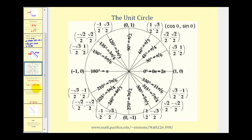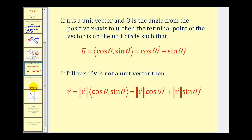While we're talking about unit vectors, it's also helpful to refer to the unit circle. If we have a position vector with magnitude one, the terminal point of the vector would be on the unit circle, and the x and y coordinates on the unit circle give us the component form of the vector. So if u is a unit vector and theta is the angle from the positive x-axis to the vector u, the component form can be written as (cosine theta, sine theta), or as cosine theta times i plus sine theta times j.